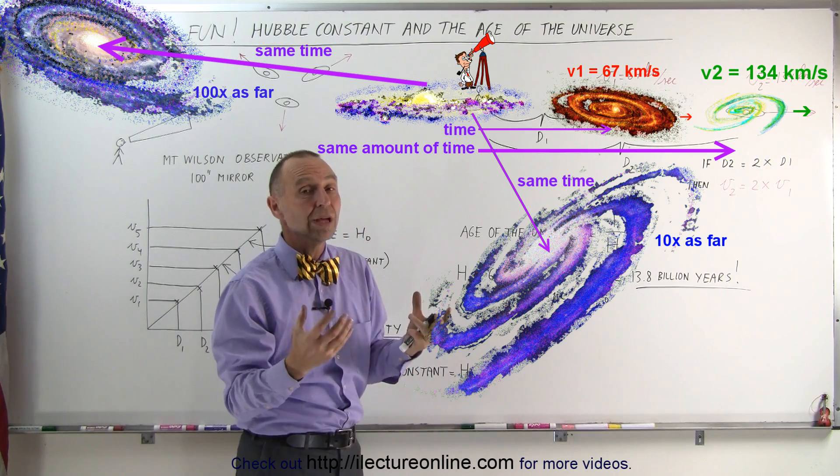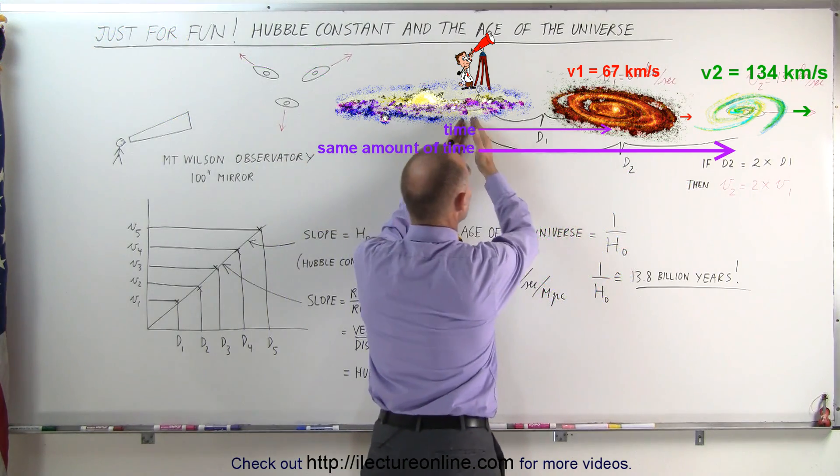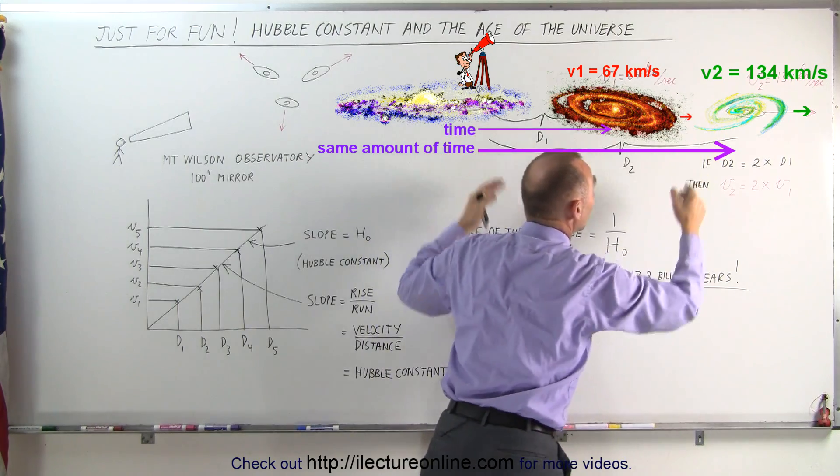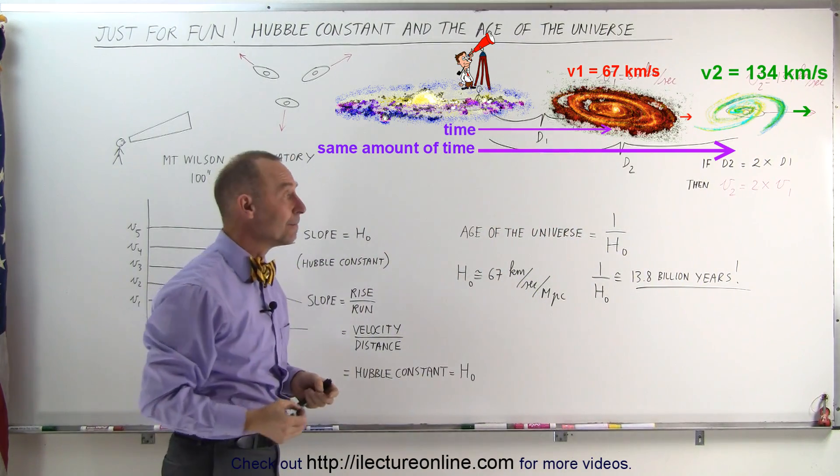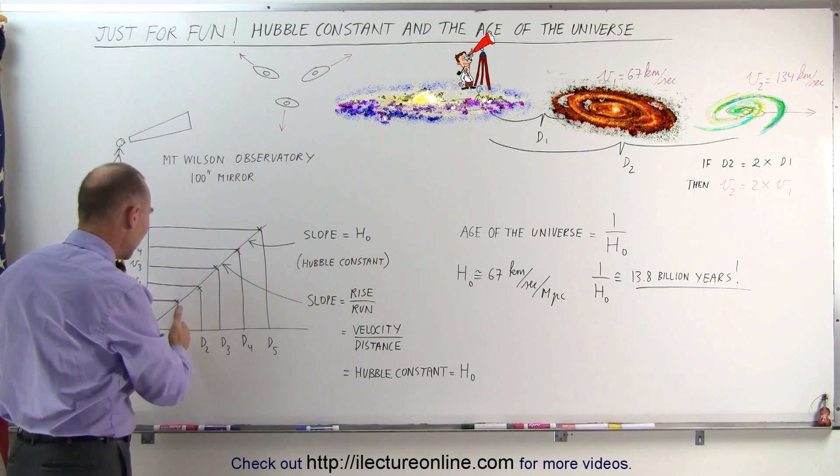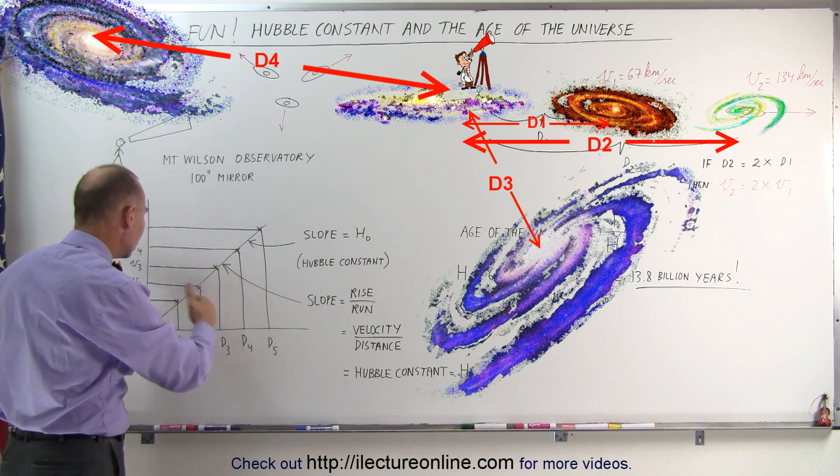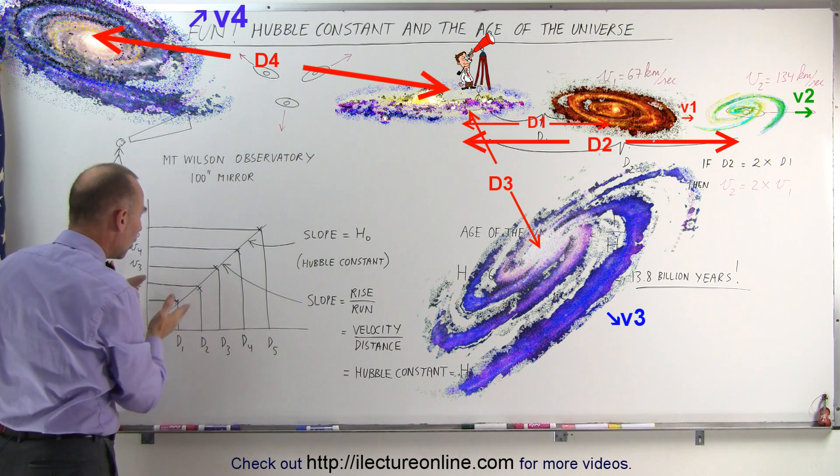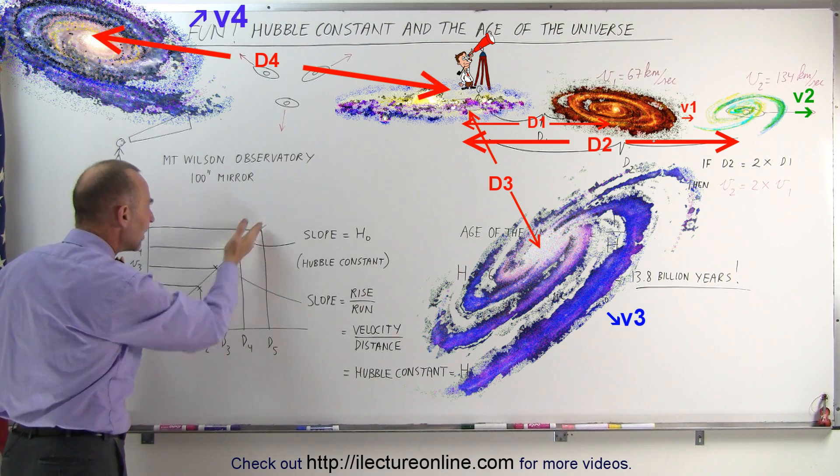So all we had to do is figure out the time it took for galaxies to move from here to here, and from there to there, and so forth. It all was the same amount of time. To do that, he drew up a graph, and he realized that the distances from the galaxies and the velocities at which they are moving apart from one another were related to each other by this line.